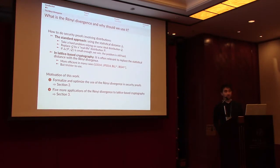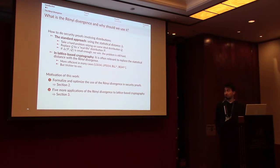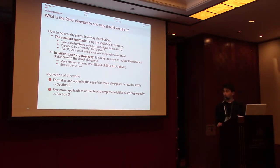The Rényi divergence gives sharper proofs and sharper bounds, especially when using Gaussians. The problem is that it is trickier to use because many nice composition and multiplicative properties that the statistical distance has are not verified by the Rényi divergence. The motivation of this work is to formalize and optimize the use of the Rényi divergence in security proofs — that is the first part — and the second part covers five applications of the Rényi divergence.